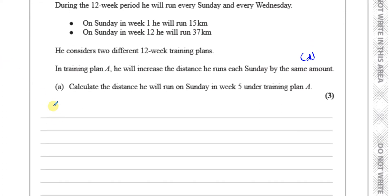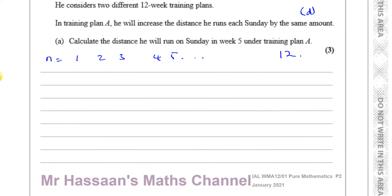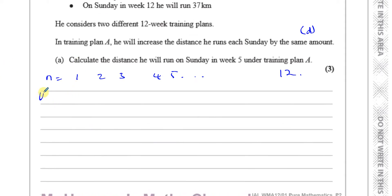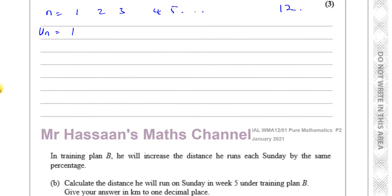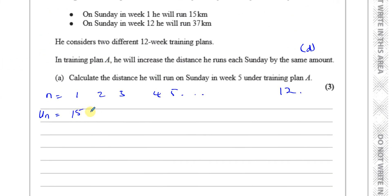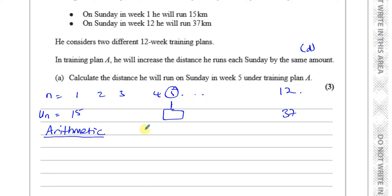So we have the following situation: week 1, week 2, week 3, week 4, week 5, all the way up to week 12. On week 1 he's going to run 15 kilometres — so U₁ = 15. We don't know the intermediate terms, but we know the last term is 37 kilometres. This is an arithmetic series because he's increasing by the same amount. The nth term formula is Uₙ = A + (N − 1) × D.